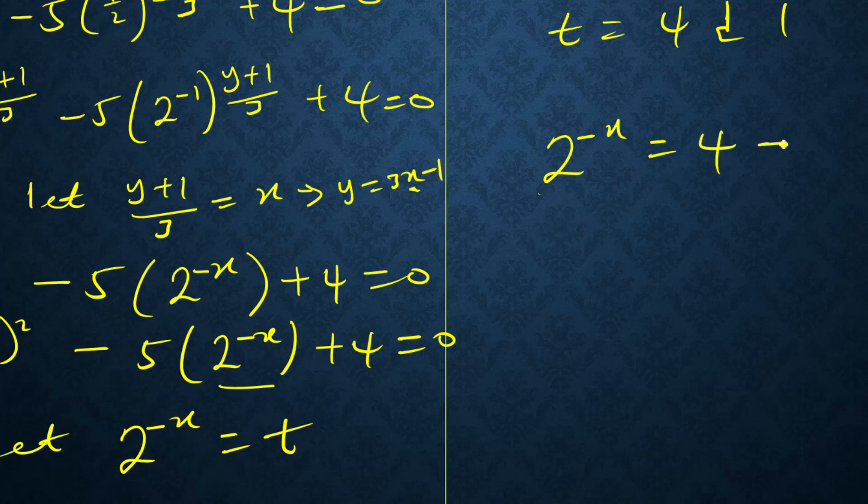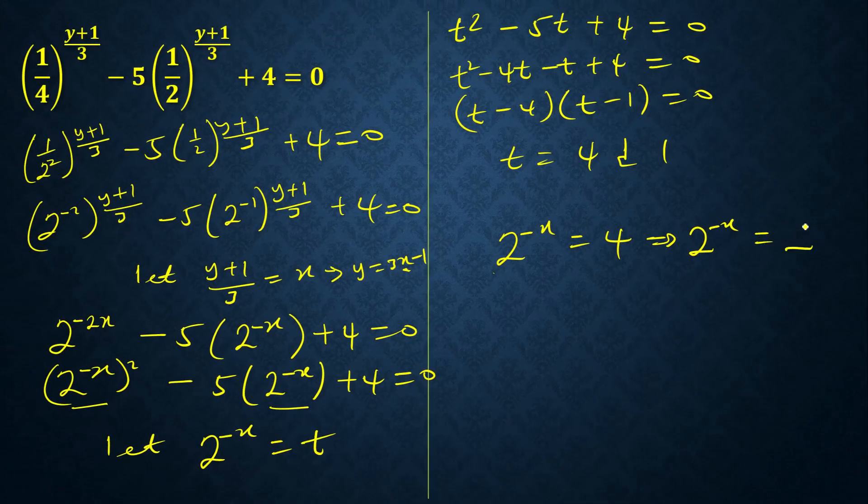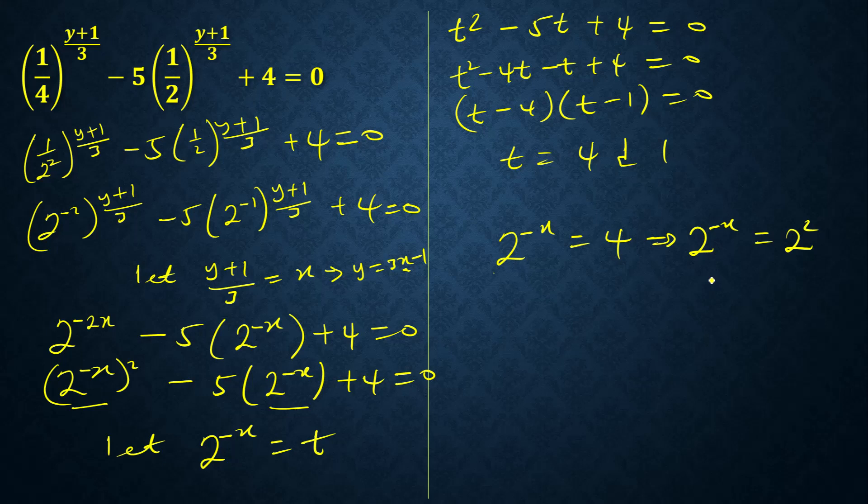So this one will be 2 to the minus x equals 2 to the power 2, so my x will be minus 2. The second answer, 2 to the minus x equals 2 to the power 0, so x equals 0.